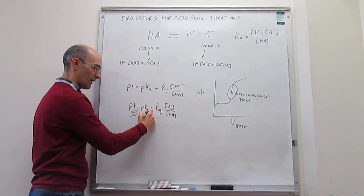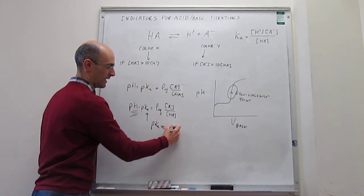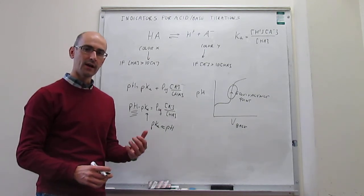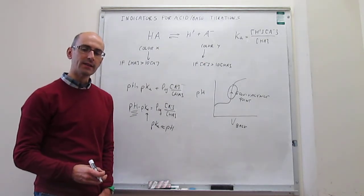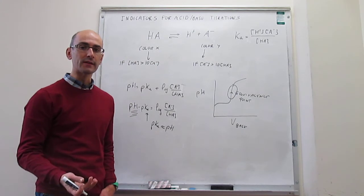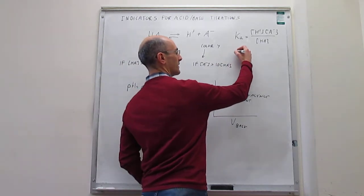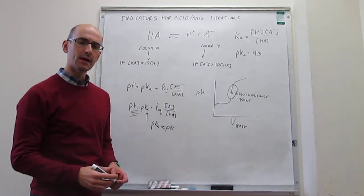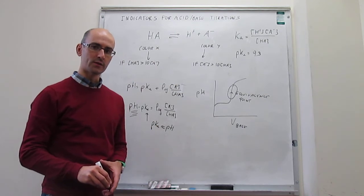The idea is that if you have a pKa for the indicator that is as close as possible to the pH of the equivalence point, then this color change will happen really quickly, and it will be a very good indicator of where the equivalence point is. Let's examine the example of phenolphthalein, which is one of the most common acid-base indicators. Phenolphthalein has a pKa of about 9.3, which means it is a really good indicator when you have a titration of a weak acid with a strong base.